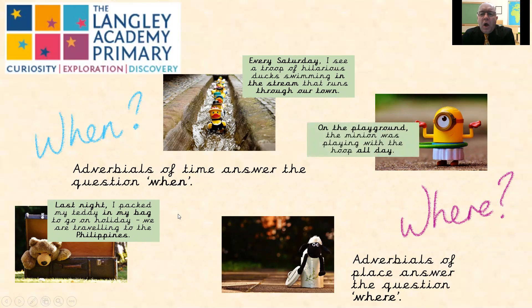What about this one? 'On the playground, the minion was playing with the hoop all day.' With the bold text, we can see 'on the playground' — which one's that? On the playground is the where. The order we put these in doesn't matter as long as the information is there for the reader. So 'on the playground' tells us where. And when was he doing it?